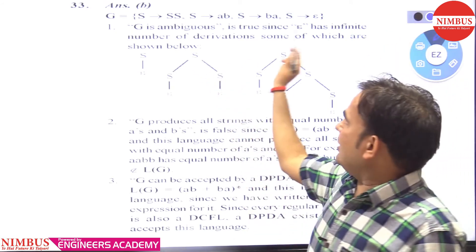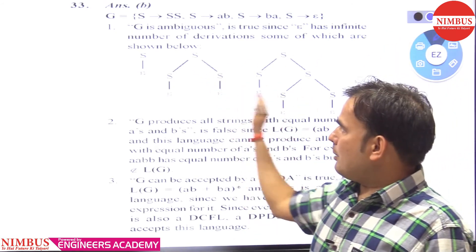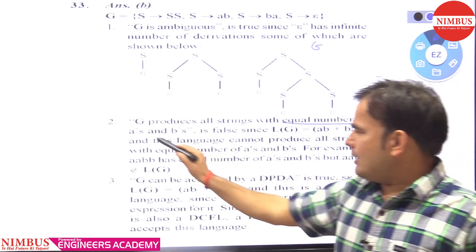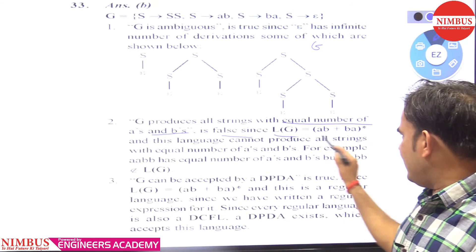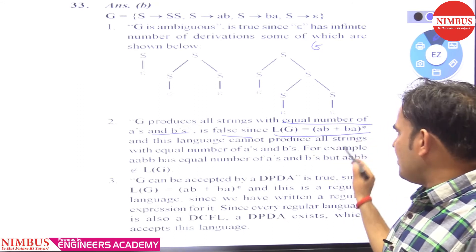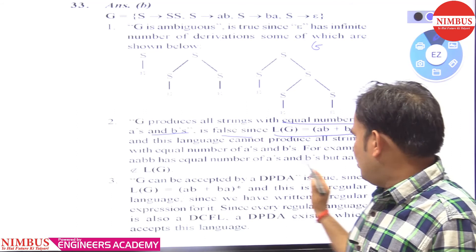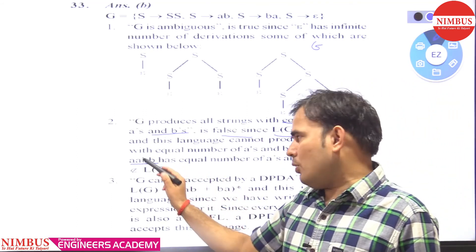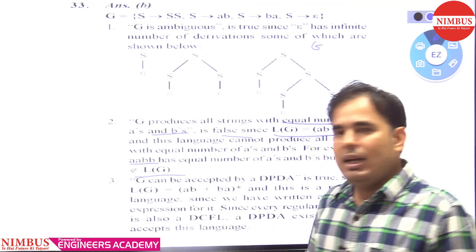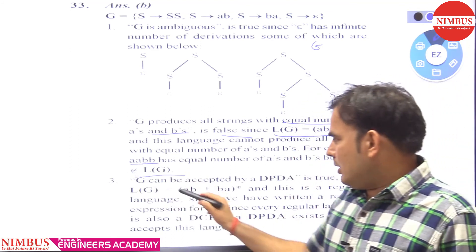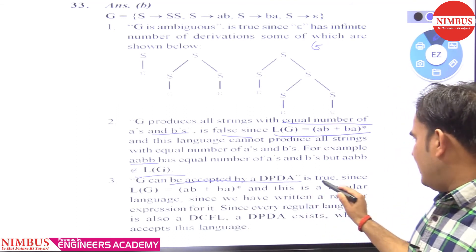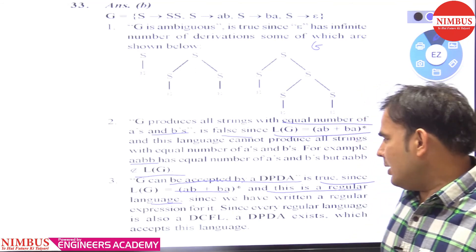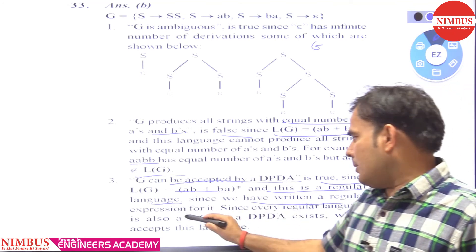To summarize: we showed different parse trees for epsilon, confirming G is ambiguous. G produces all strings with equal A's and B's is false, since L(G) equals (AB + BA)* — for example, AABB has equal A's and B's but does not belong to L(G). G can be accepted by a PDA is true since L(G) is a regular language, as we wrote a regular expression for it.